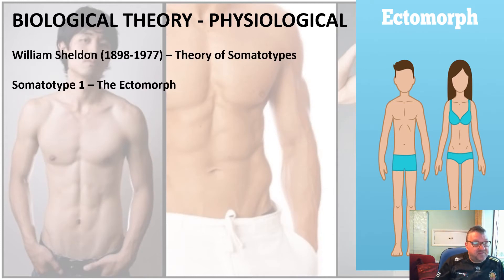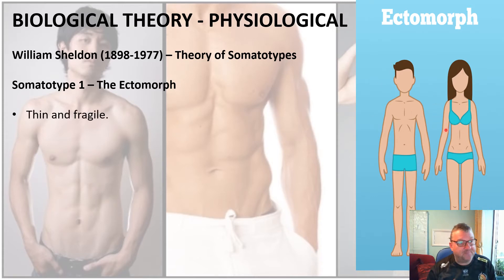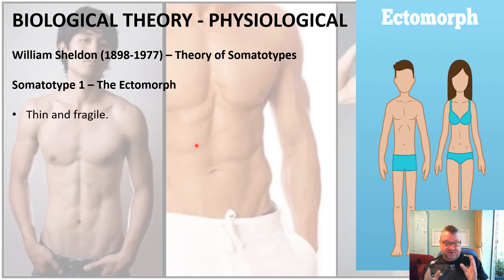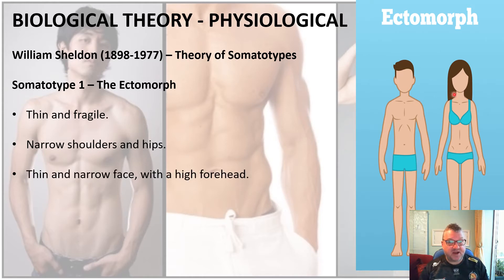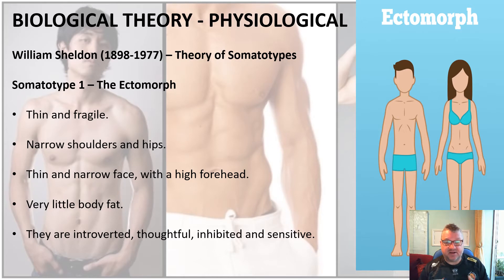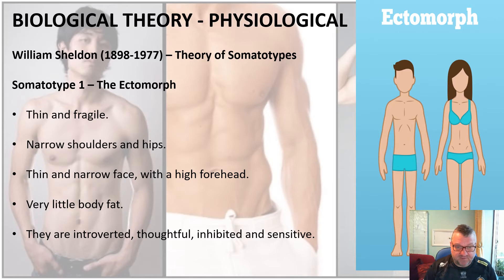The first somatotype is the ectomorph. Sheldon categorised an ectomorph body type as being thin and fragile, with narrow shoulders and hips, a thin and narrow face with a high forehead, and very little body fat. He believed that an ectomorph was introverted, thoughtful, inhibited, and sensitive.